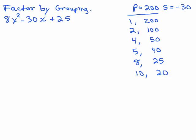Since the sum is negative, the bigger number must be negative. And since the product is positive, the other number must have the same sign. So the other sign is also negative. And hey, I was right. There it is, those two numbers add up to negative 30.